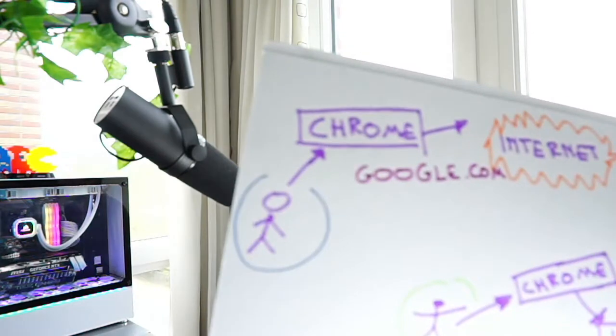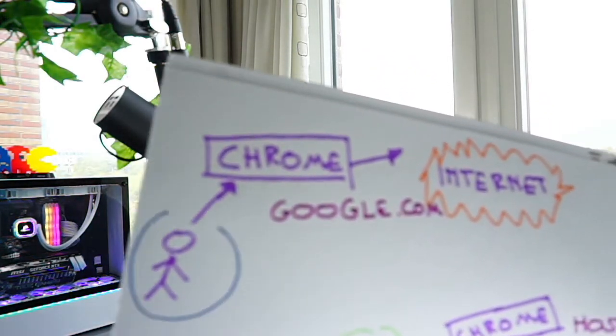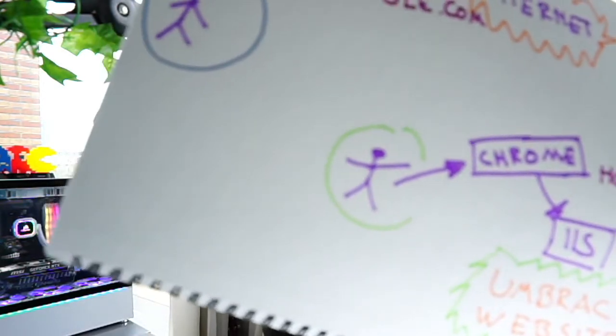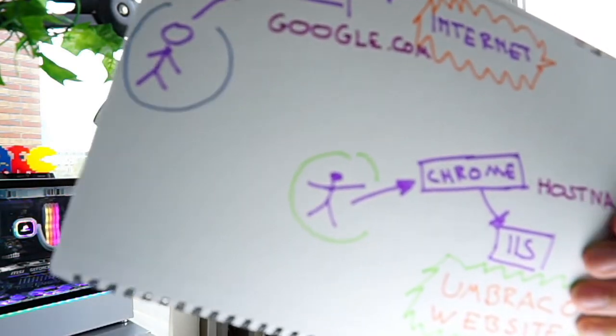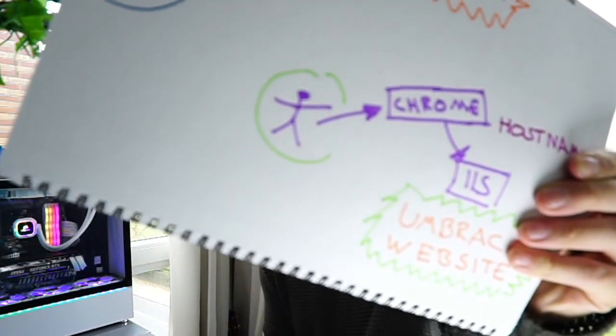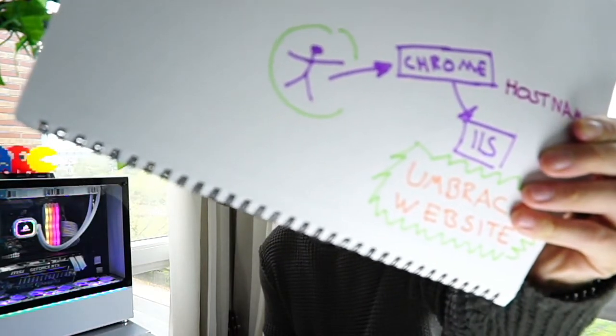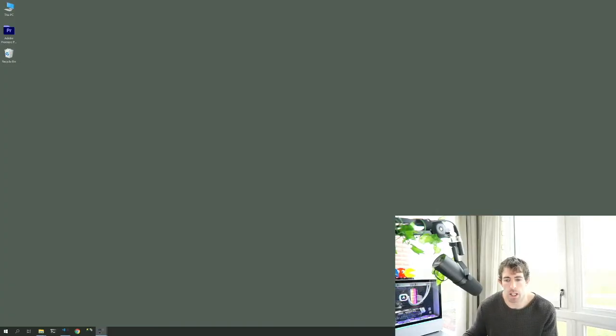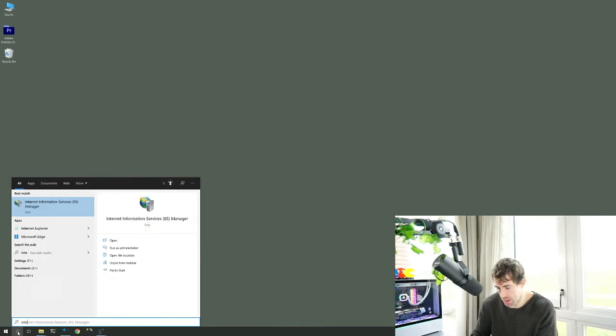To get the website up and running we need to configure IIS — the Windows web server. We need a way to map requests made in a browser to our local web files. Normally when you type google.com you get a request to the internet; instead, we want a specific host name to redirect to IIS, which then loads up our Umbraco website. To configure IIS, search for 'Internet Information Services' at the bottom.